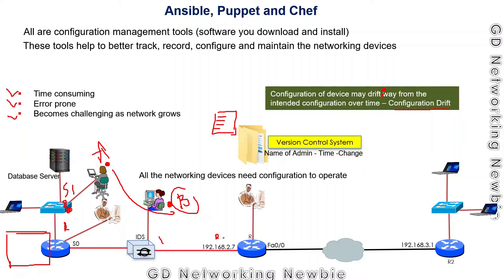This version control approach helps to some extent, but problems remain. If someone makes changes to a networking device without updating the central file, we end up with two copies — the actual running configuration on the device and the configuration noted in the files. It becomes unclear which configuration is correct, making the situation challenging for network administrators.